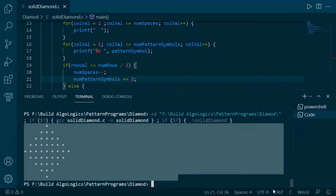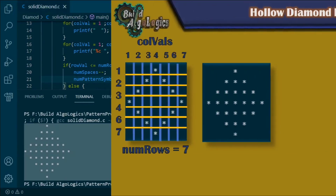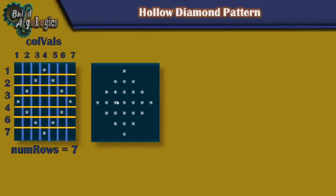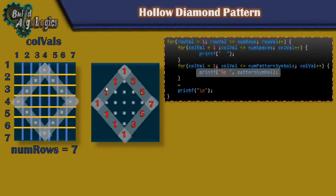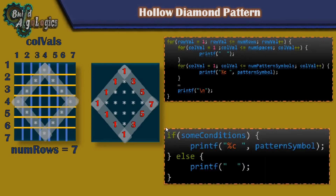For the next two patterns I'll use this code as a base. For the hollow diamond, this pattern is very similar — we need to make changes in the inner printing part. Instead of printing only the pattern symbol, we'll print both pattern symbols as well as spaces. We can achieve this by using an if-else block: when some conditions evaluate to true we execute the if block, otherwise the else block.